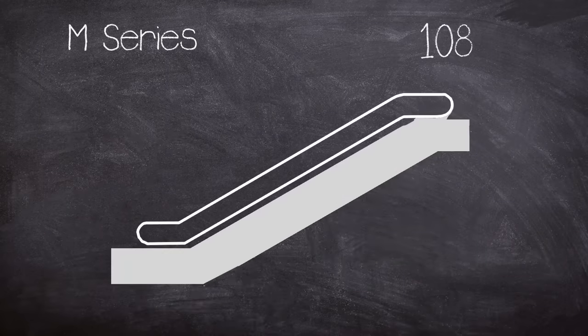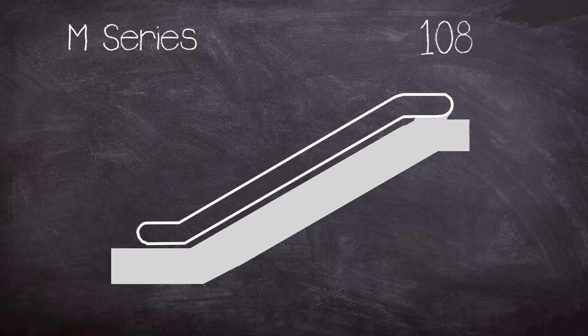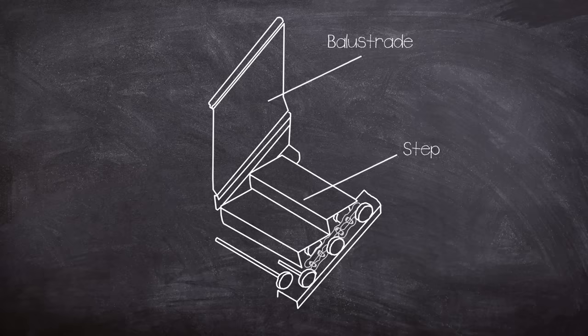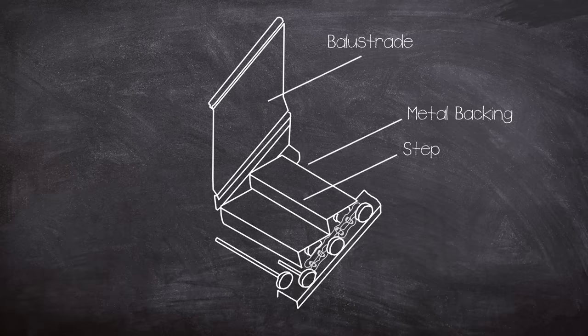They were capable of speeds between 30 and 35 meters per minute and consisted of wooden decking, side panels, cleated steps and risers. The steps were metal backed plywood with maple wood cleats.